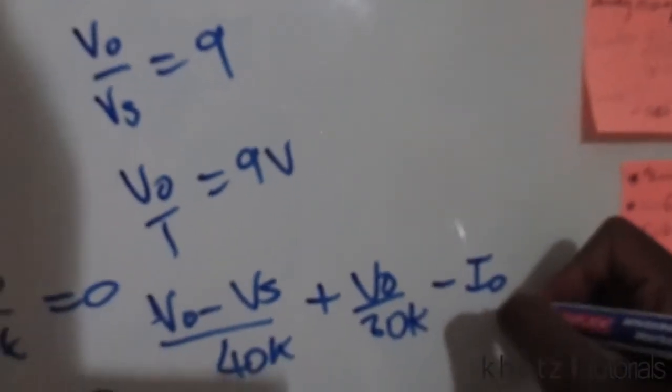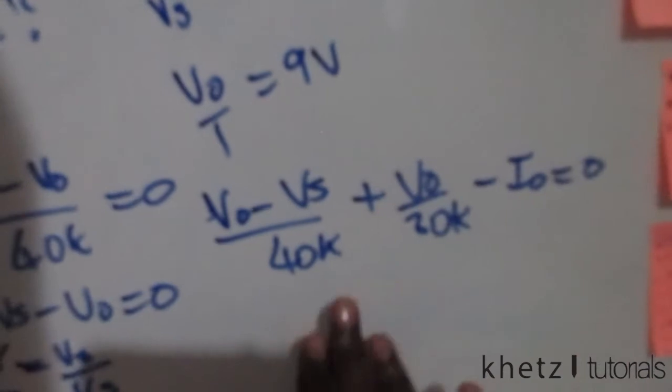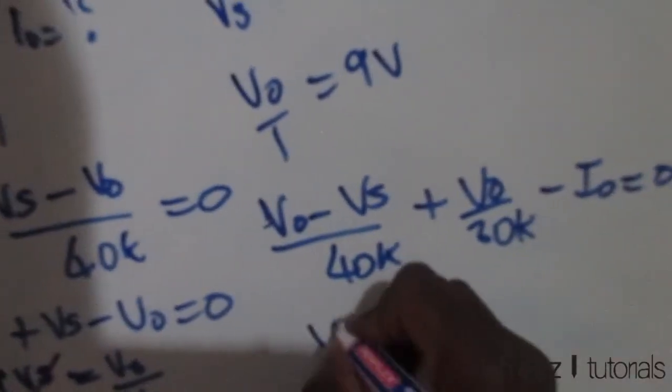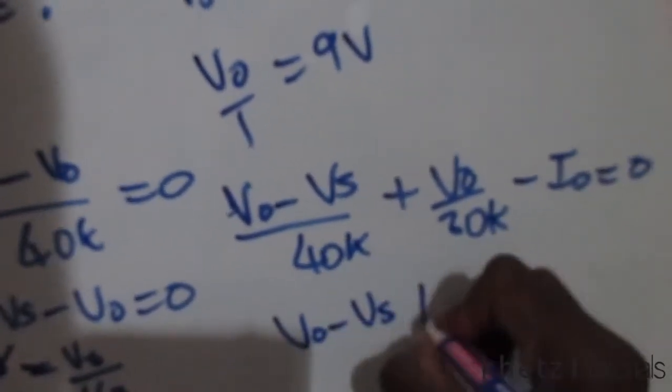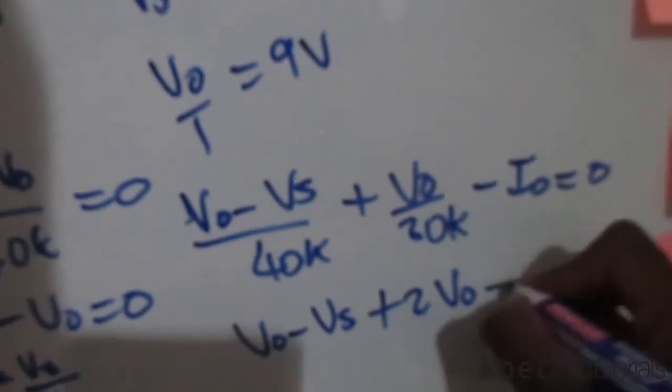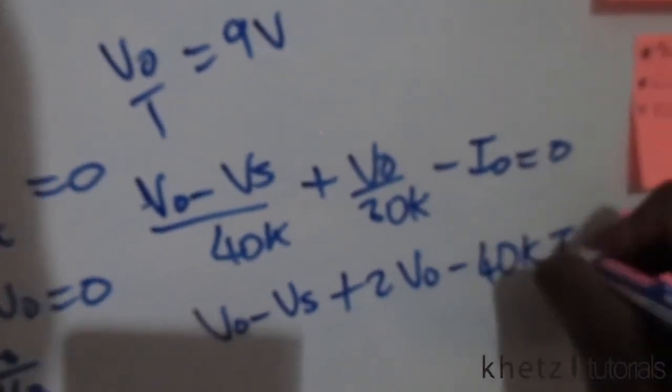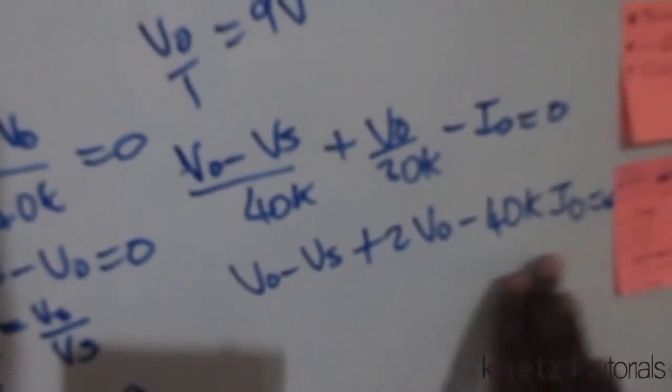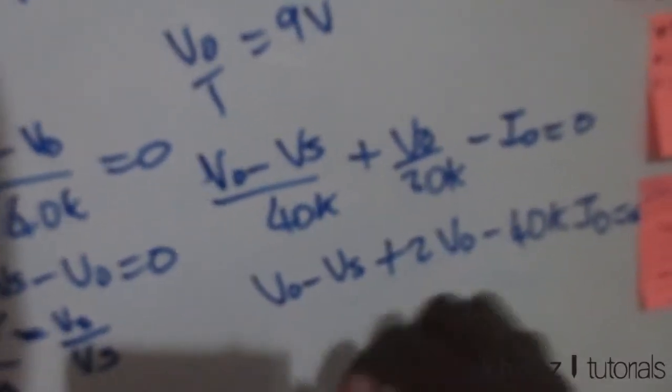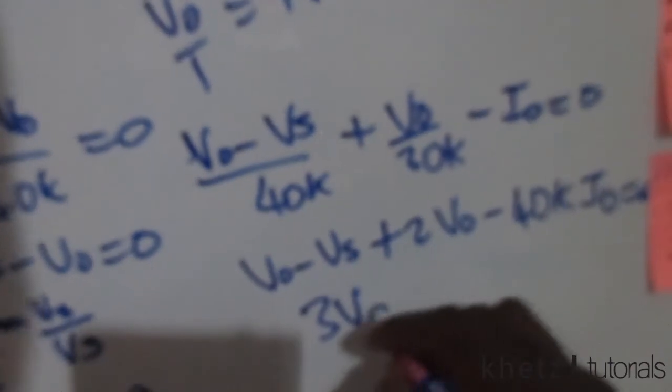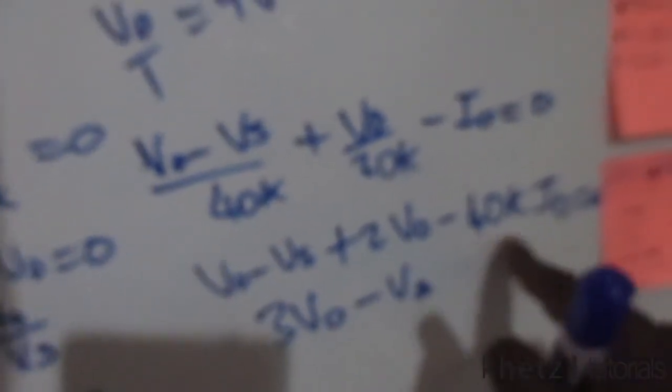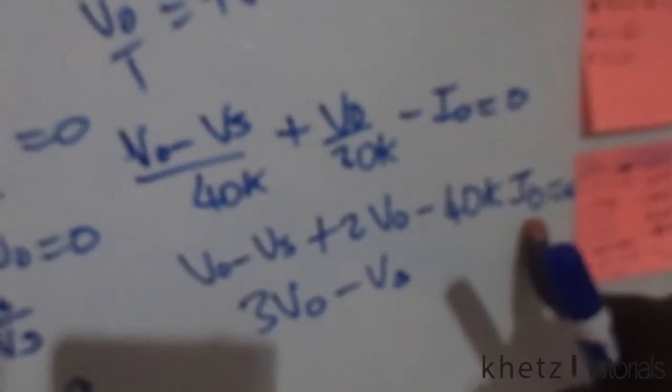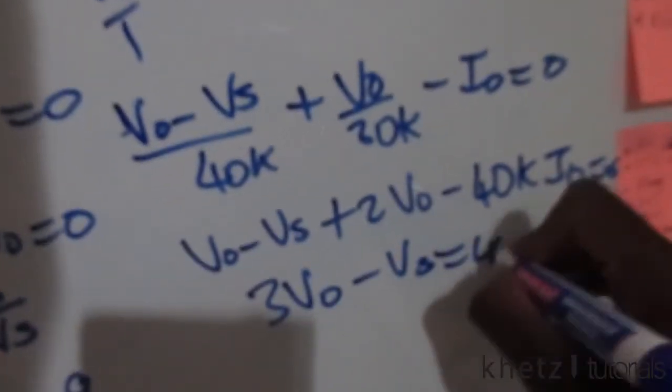Multiplying through by 40k, we're going to have vo minus vs plus 2vo minus 40k times io equals zero. Now adding the common terms up, we're going to have 3vo minus vs. Then I'm going to take this 40k io to the other side of the equal sign; it's going to become positive.